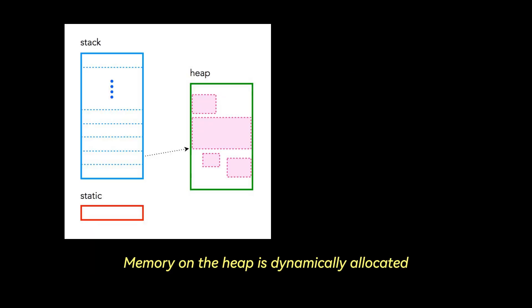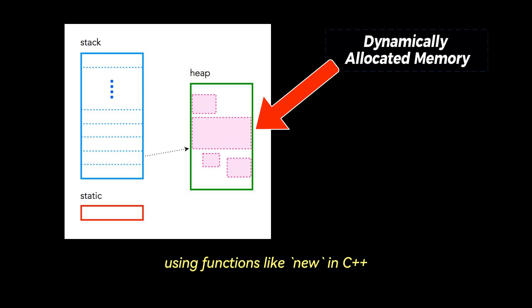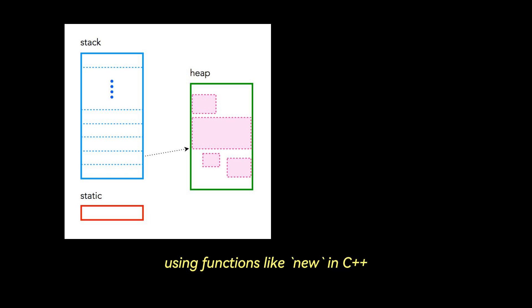Memory on the heap is dynamically allocated using functions like new in C++ or malloc in C. The programmer must explicitly deallocate this memory using delete or free in C.